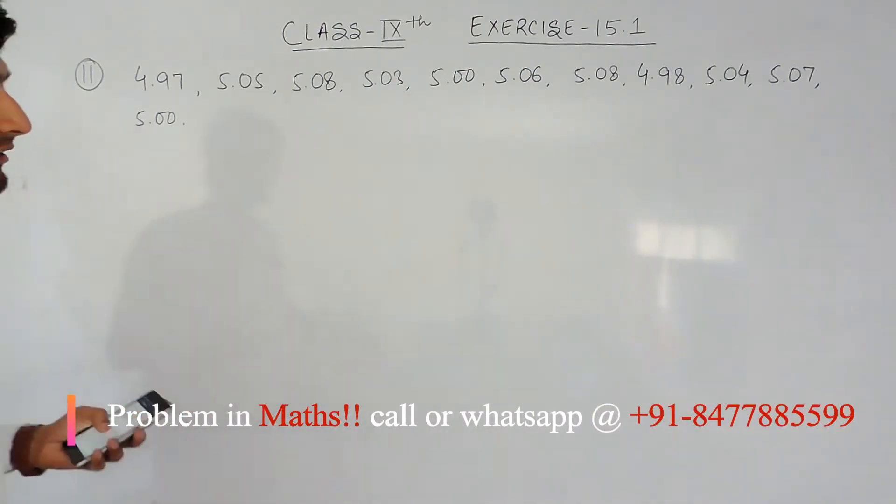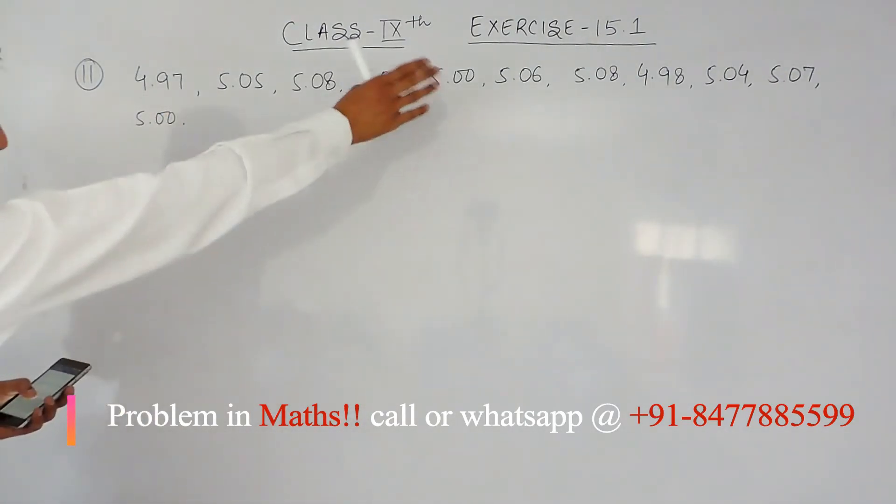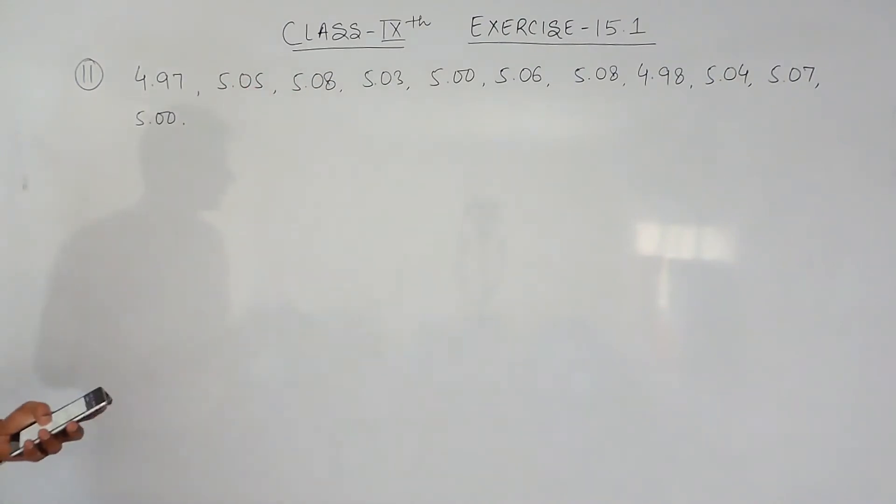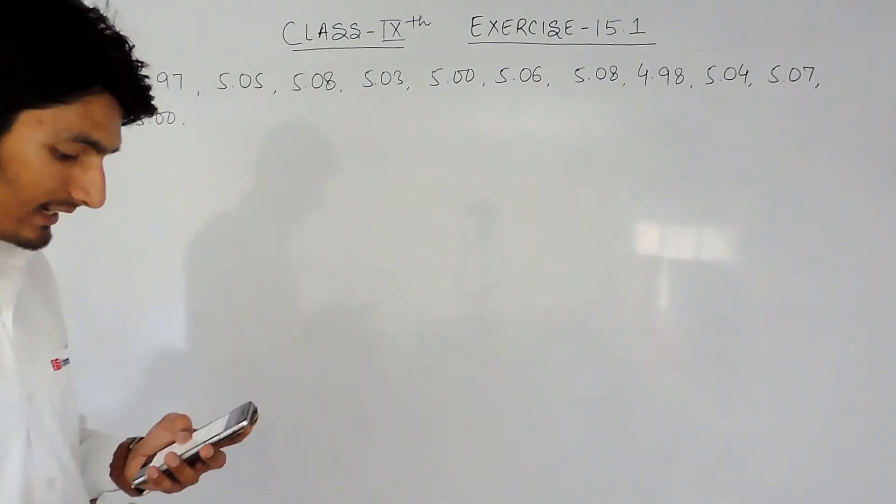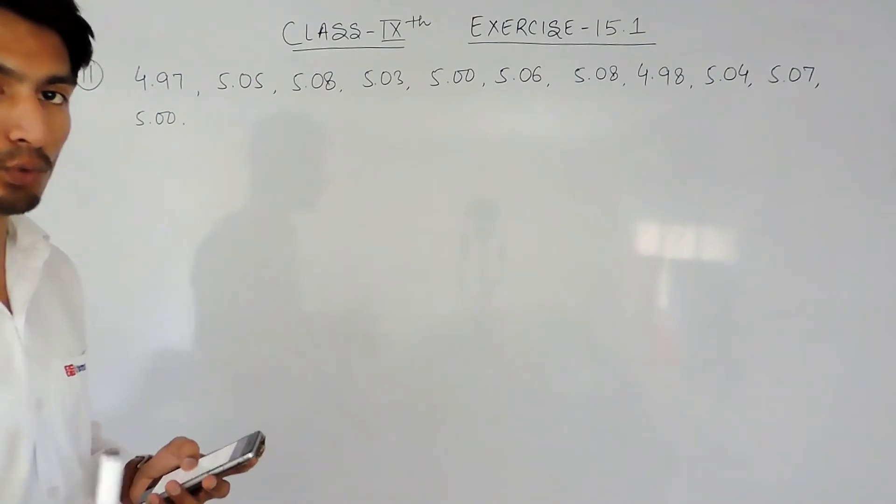These are the weights: the 5 kg bag contains 4.97 kg and so on, in the second case it contains 5.05 kg and so on. In 11 cases it is given to us and you have to find the probability that any of these bags chosen at random contains more than 5 kg of flour.